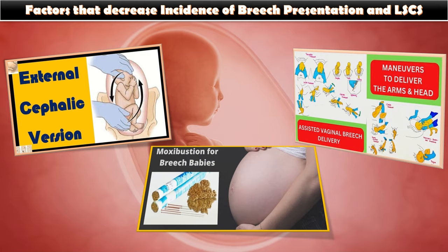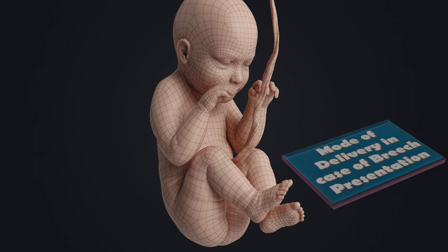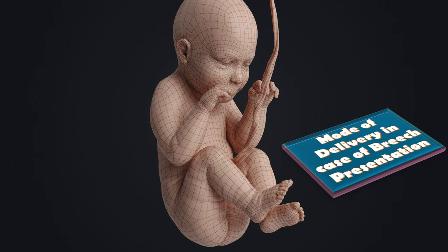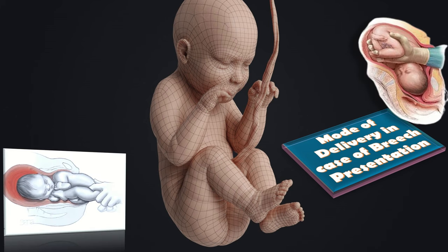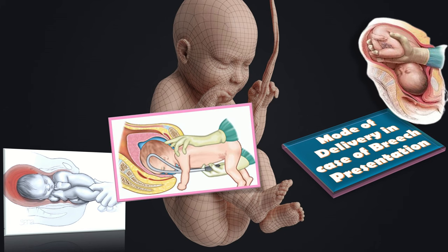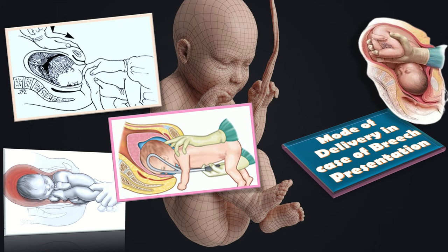The mode of delivery in case of breech presentation includes spontaneous vaginal delivery, breech extraction as done in the case of the second twin, assisted vaginal delivery, and cesarean section in which Smellie's maneuver is given.